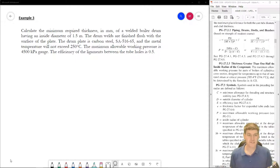Okay, so we're going to be asked to calculate the minimum required thickness of a welded boiler drum having an inside diameter of 1.5 meters. The drum welds are finished flush with the surface of the plate. The drum plate is carbon steel SA516-65, and the metal temperature doesn't exceed 250 degrees Celsius. The MAWP is 4,500 kPa gauge, and the efficiency of the ligaments between the tube holes is 0.5. Okay, so let's make sense of this and solve our problem.